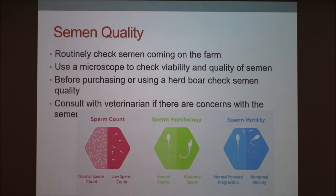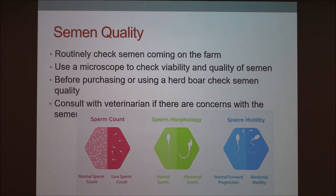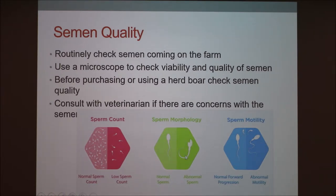Semen quality is another big factor. You want to make sure the semen you're buying, collecting on your farm, or from the boar you're using is viable and not a low count. You need to routinely check semen coming onto the farm and from any on-farm boars you're using. You can use a microscope — just warm it up and put it under there to check the viability and quality. Make sure it's moving forward, not doing abnormal movements or circling. You want it moving in a straight line, and you obviously don't want abnormal-looking sperm.